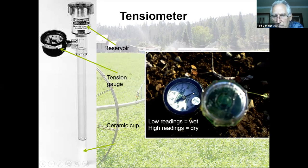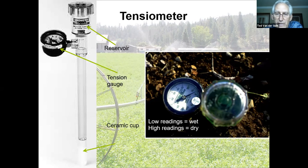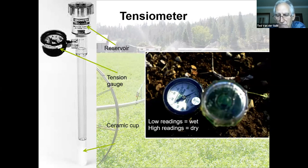Low readings are wet, high readings are dry. Cost is around $125 to $150 per unit. You can also get units that will connect to your controller — the controller will turn off and on depending on the tension. You always need to install in pairs with cherries because your rooting depth goes quite a bit deeper — you want to know moisture level near the surface and deeper down. If the deeper sensor has moisture but the surface is drier, you may not need to irrigate as long.